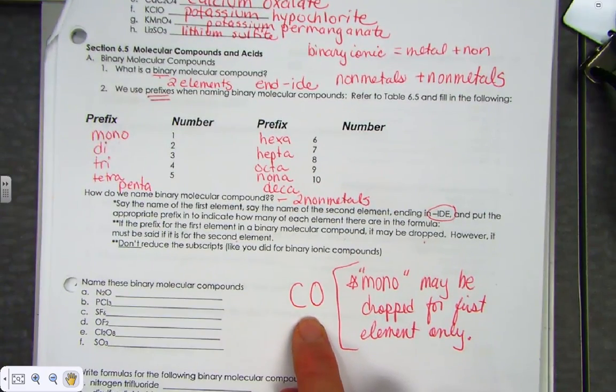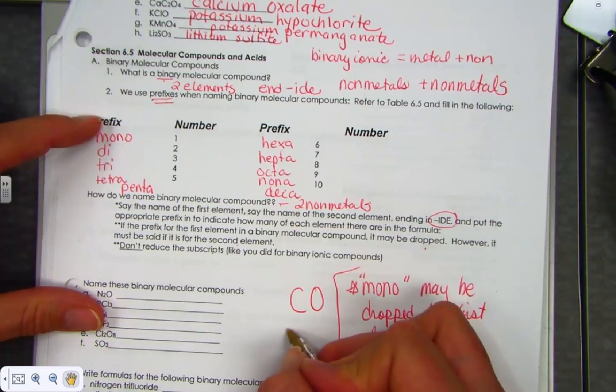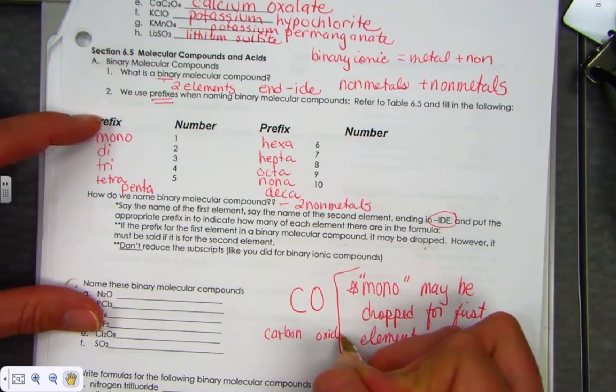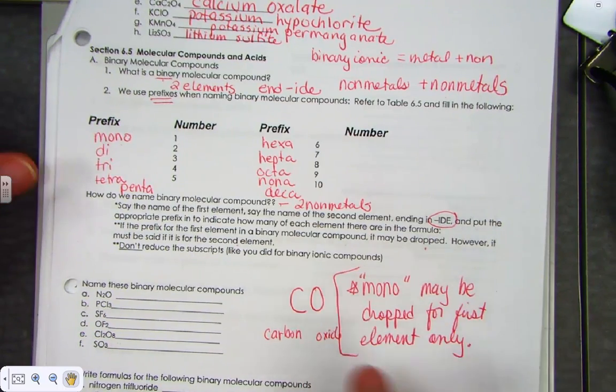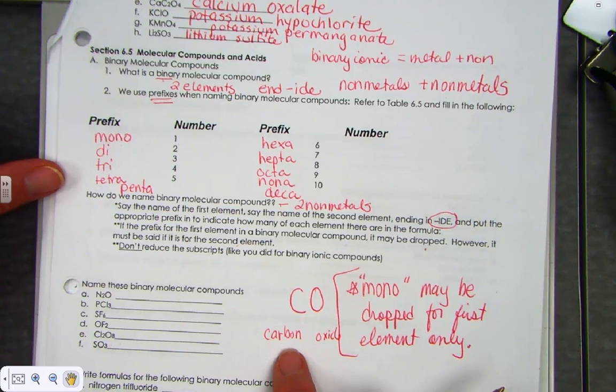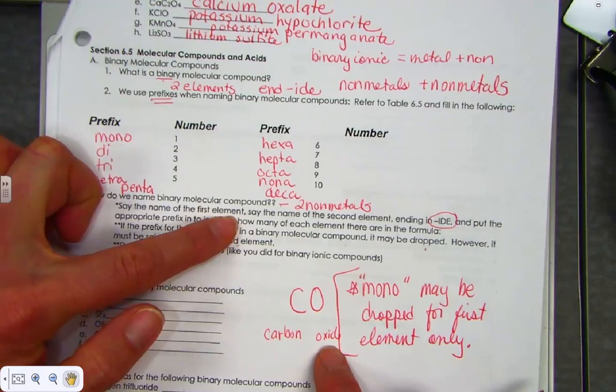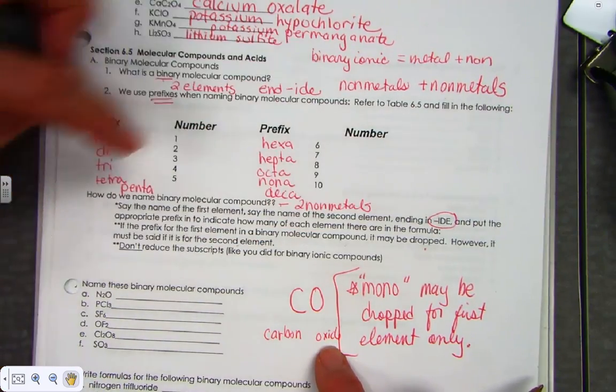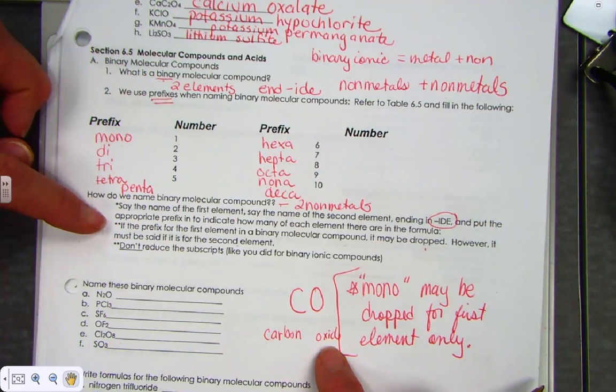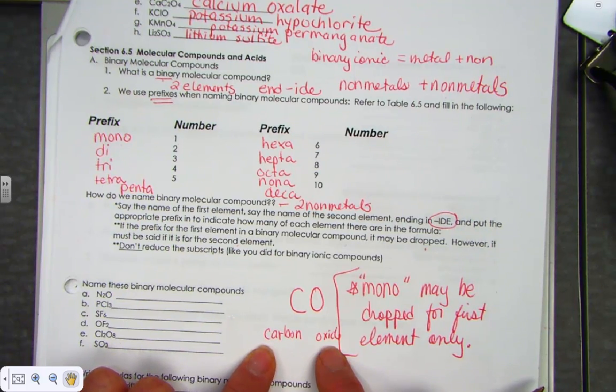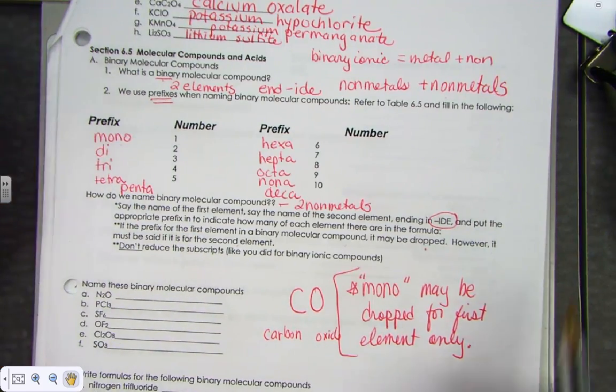A good example. Let's name this molecular compound CO. C stands for carbon. O stands for oxide. Putting on the prefixes, notice it's just the last name that ends with ide. The name of the first element, say it just as it is. The name of the last element must end in ide. So far, we say the name of the first element, say the name of the second element, ending in ide. And now we're told, put on the appropriate prefix to indicate how many of each there are in the formula.